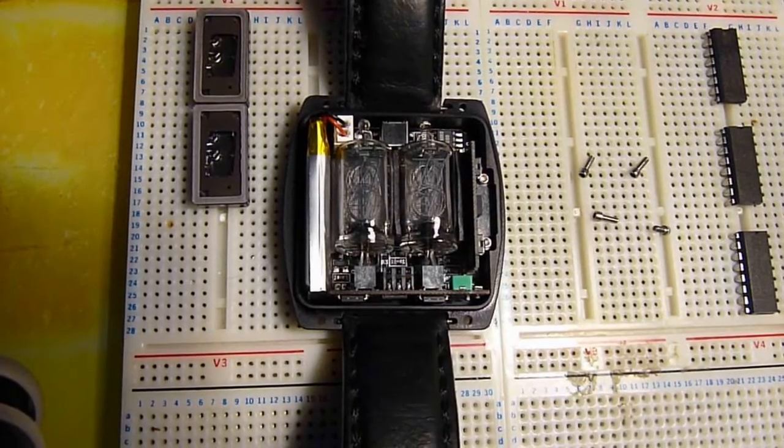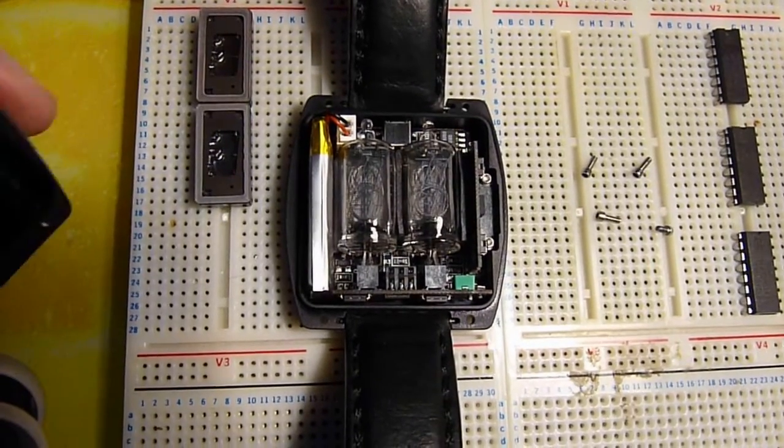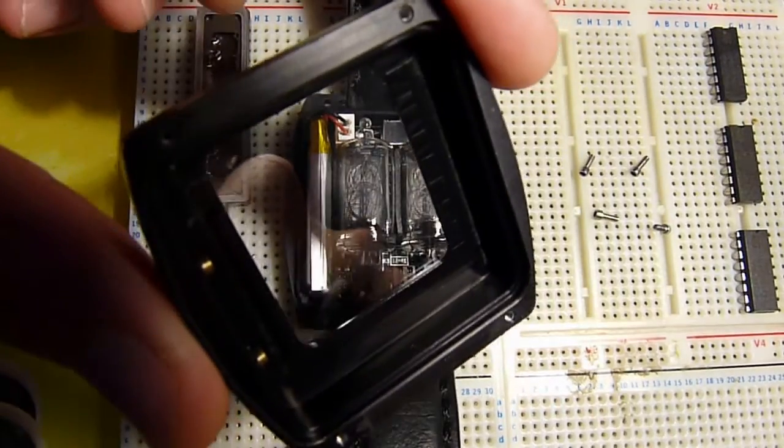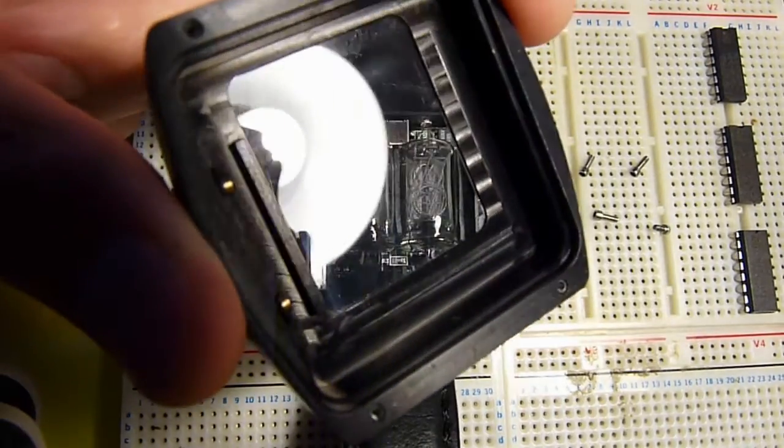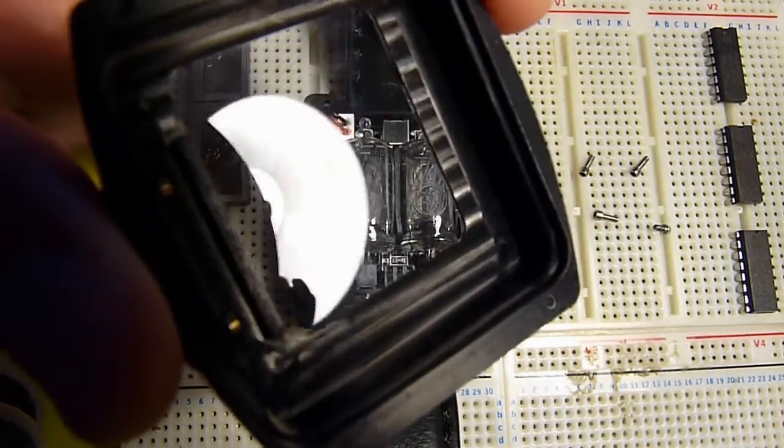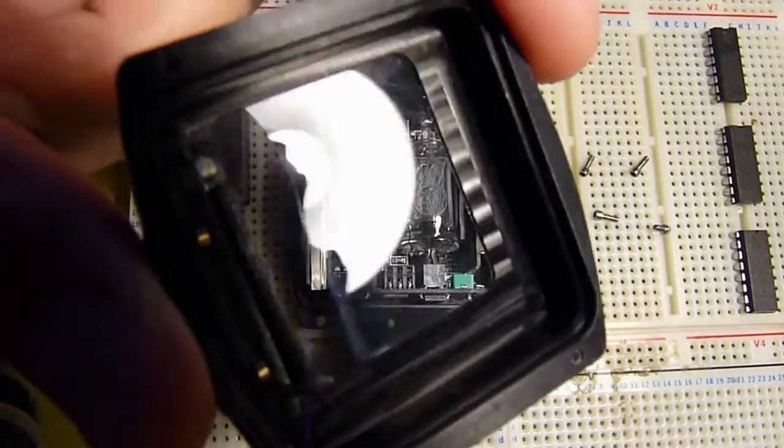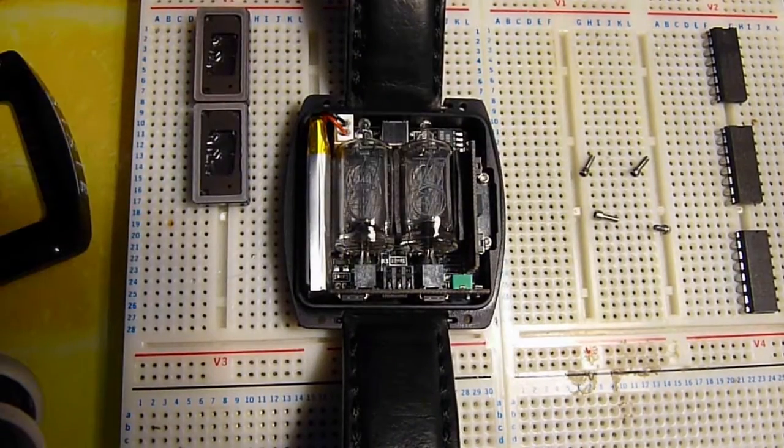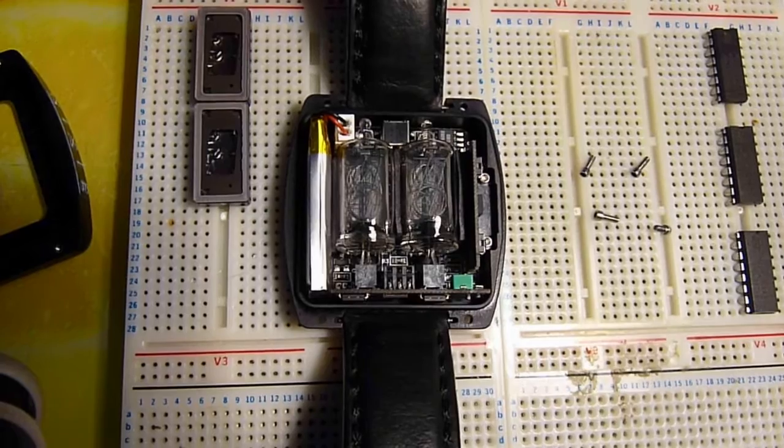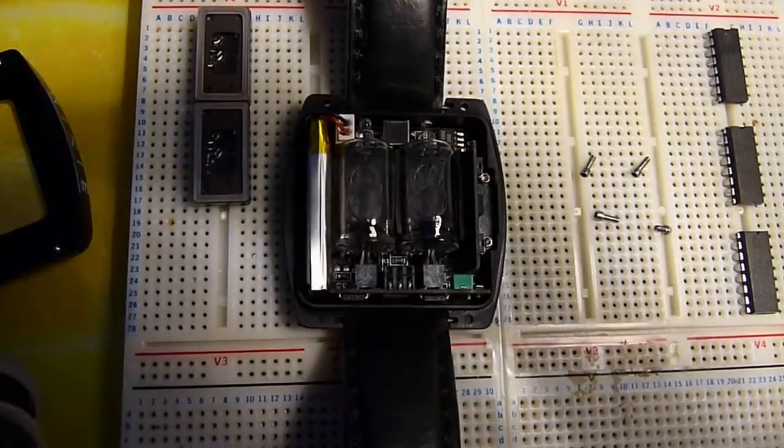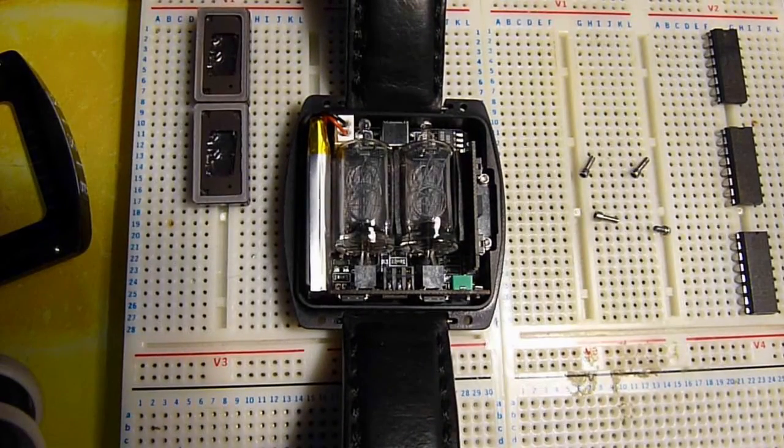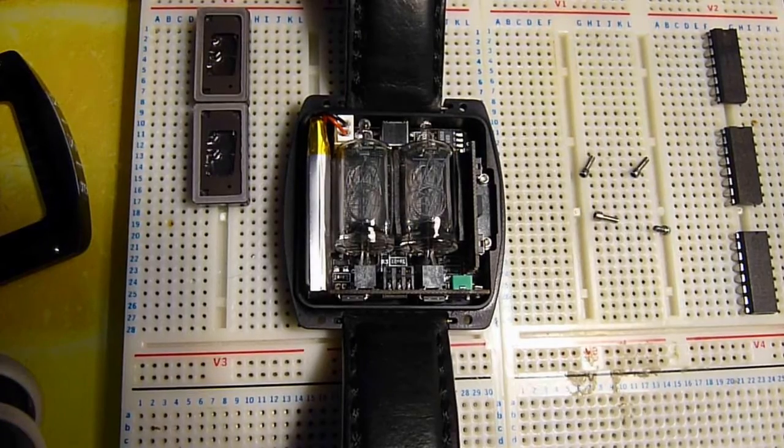But yeah, thanks for watching. Oh yeah, and here's the base. A little bit of silicone sealant in there should do it. I just need to get myself a syringe and stick some silicone in there and just do a little bead going around so that it's fully waterproof, because I tend to be the type that forgets I'm wearing my watch and jumps in the swimming pool.